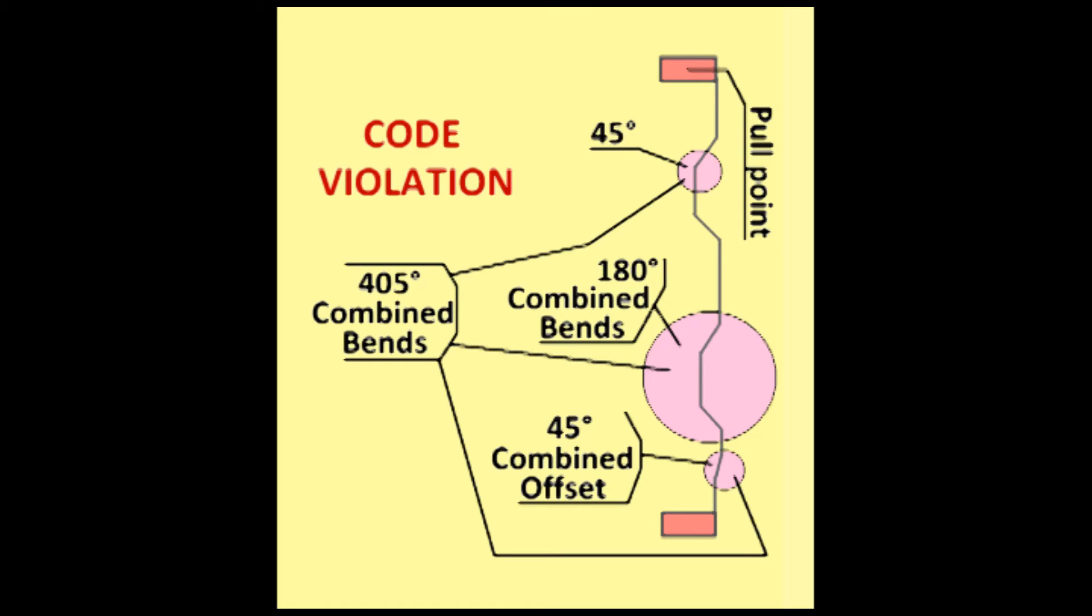But when you do the math, you see that your bends come to 405 degrees. Everything was fine with this conduit until the offset was put in at the end. And then we tip the scale over the 360 degree point. We came up with a total of 405 degrees. That's a no-no.